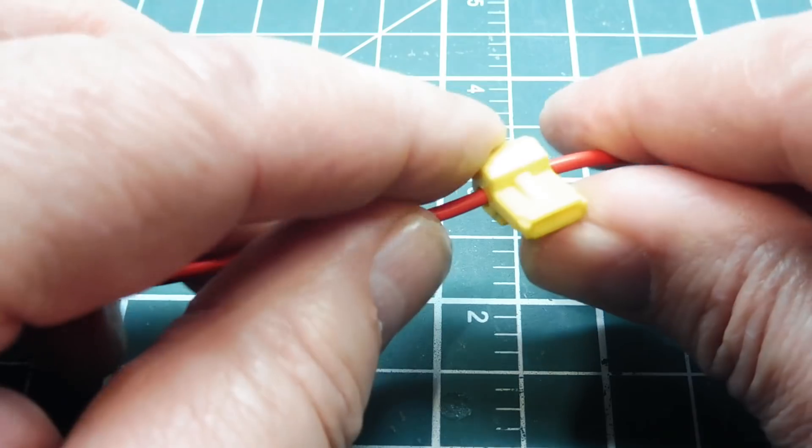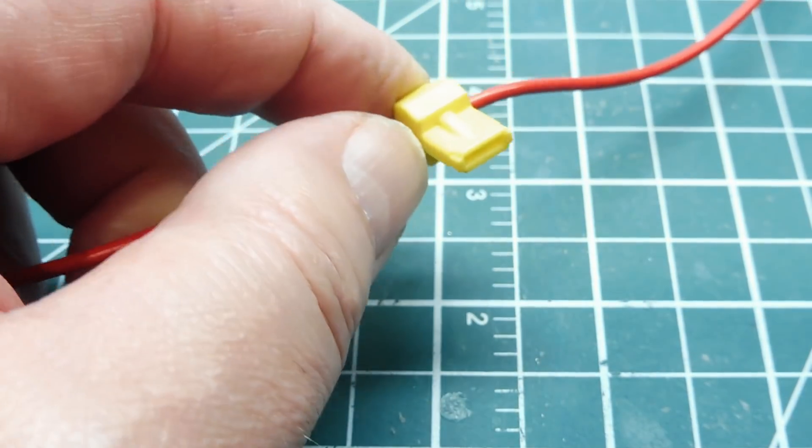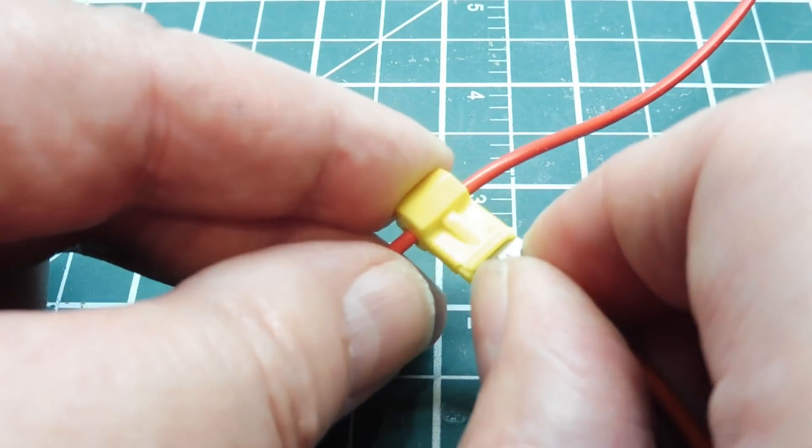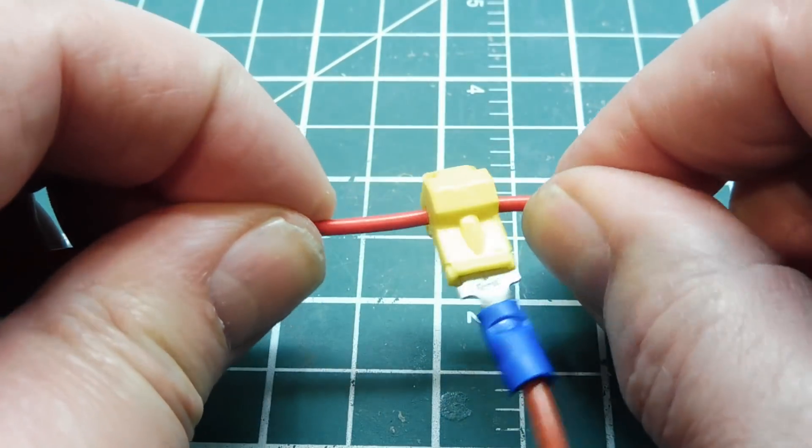There's another way we could do this, it's another crimp on tap, but this one takes a spade, a male spade connector, and it goes in. So now this wire is tapped into this top wire, the top power wire.